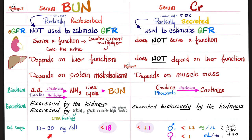The reference range for serum BUN is between 10 and 20; anything below 18 is generally considered normal. How about serum creatinine? It differs between males and females because males on average have bigger muscle mass. A useful number to memorize is 1.1 — if it's less than 1.1, we're usually okay; above that, it's time to worry. And please don't forget the non-linear relationship between serum creatinine and the glomerular filtration rate, which was covered in a previous video.